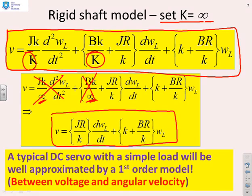So here is a very important observation: a typical DC servo with a simple load can be well approximated by a first order model. And that's important that you know that. So even though we did come up with a second order model, that was assuming a flexible shaft. In practice, a rigid shaft assumption is good enough for many examples, and therefore the model will be first order. In other words, you get very simple dynamics. The model is between the voltage supplied and the angular velocity.